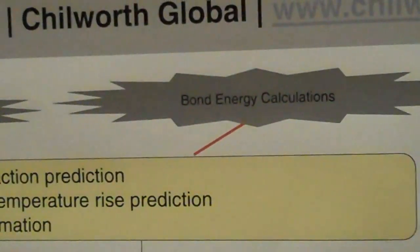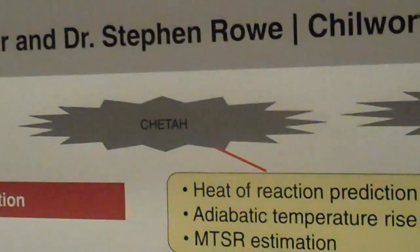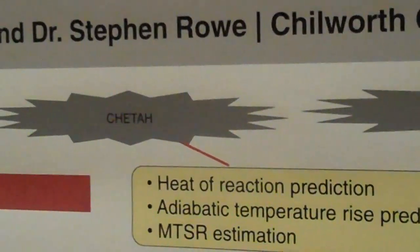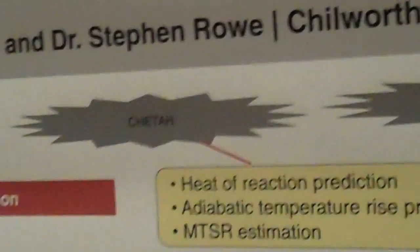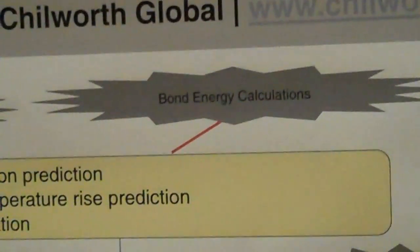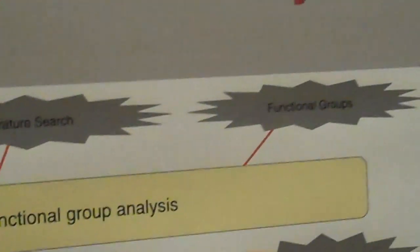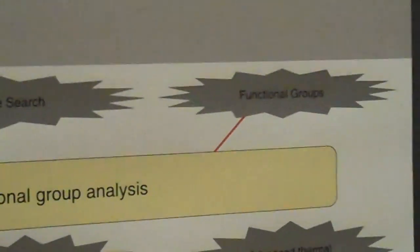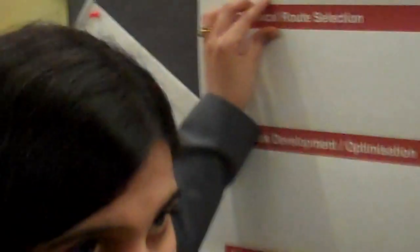We also discuss different tools. For example, Cheetah, which is a software module developed by the ASTM committee — it predicts the heat of reaction. You can also use bond energy calculations, literature review of similar materials, and look at your own molecule to see if it has functional groups that can be highly unstable. This can be done at the chemical route selection stage, which is very critical and pretty much the first step.